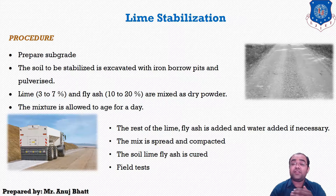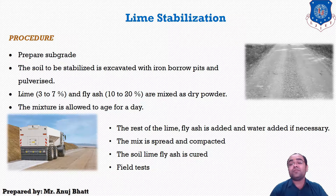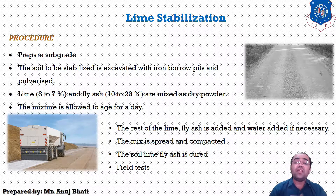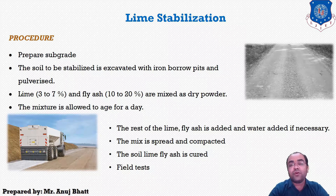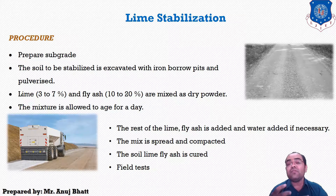When using fly ash, the fly ash content may vary from 10 to 20 percent of the soil mass, and the percentage of lime in that particular mixture should be between three to seven percent. This was the brief information about how we can use lime with the soil mass and what amounts to mix in lime stabilization.